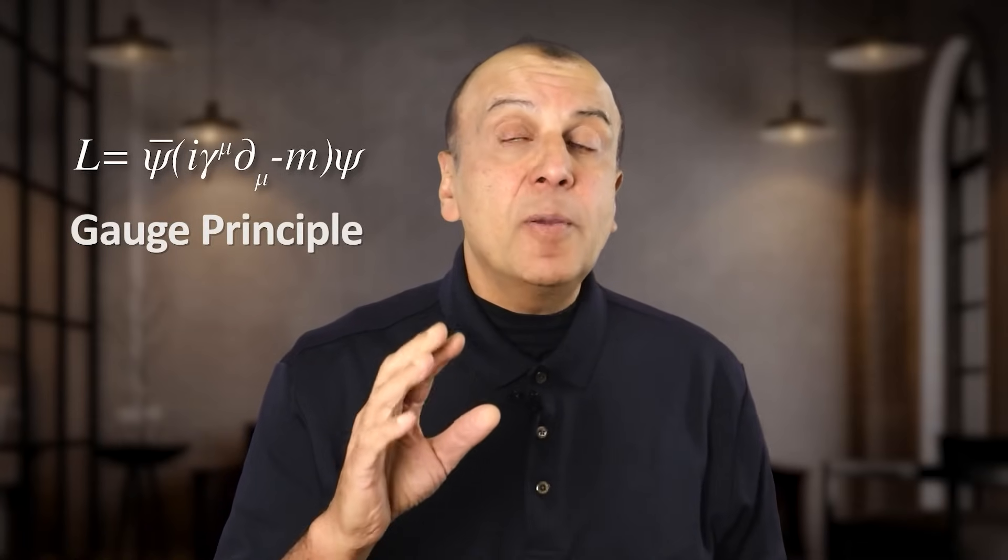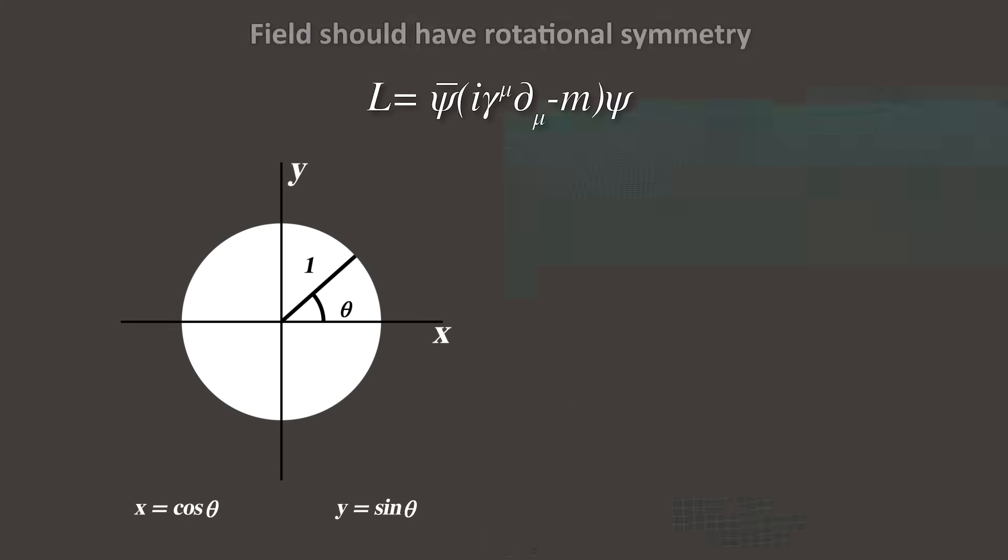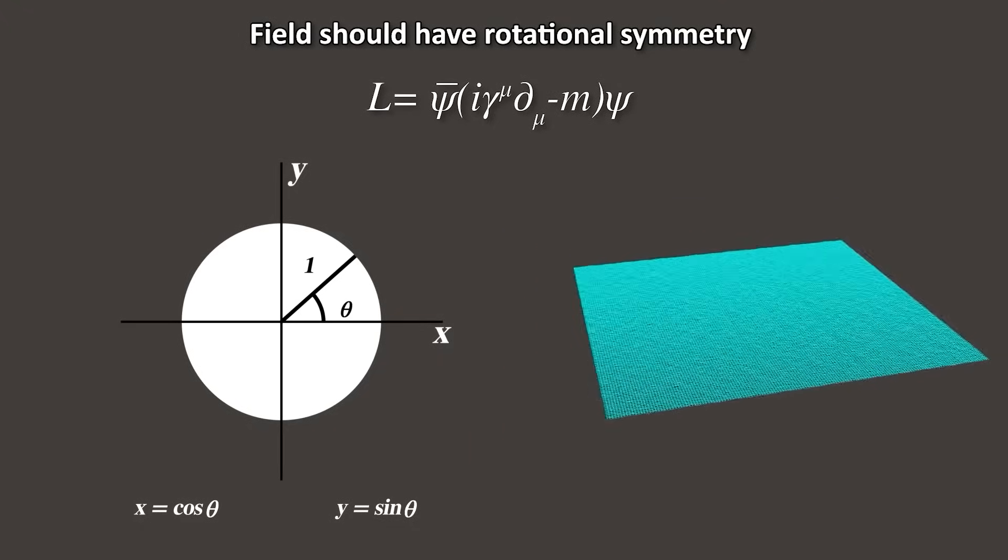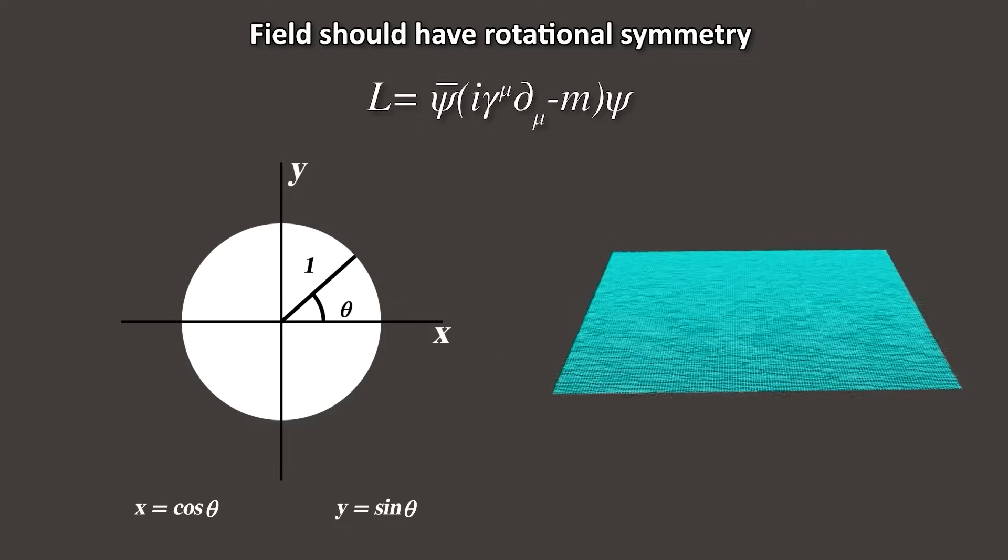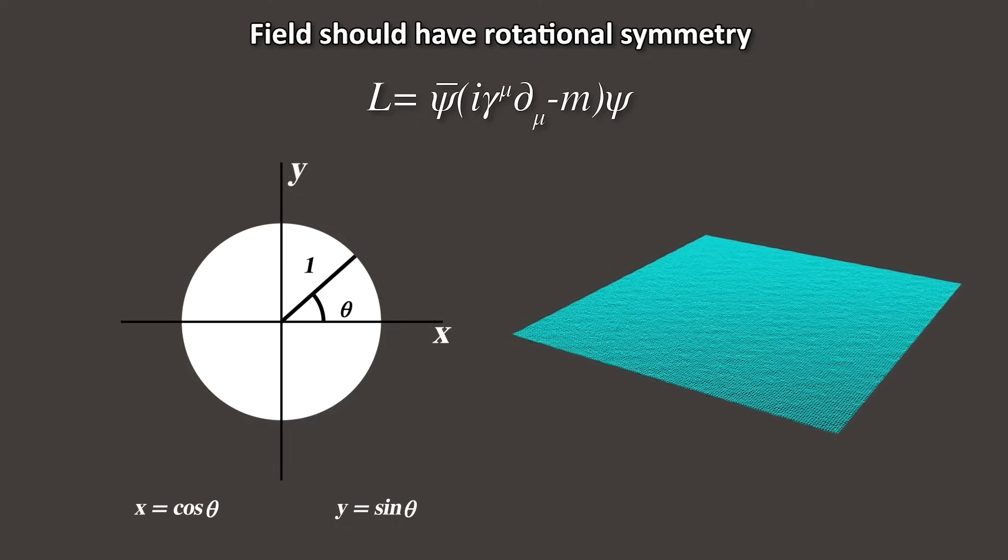To make this equation come to life, we have to introduce the gauge principle. To do that, we have to make a demand to this equation. The demand we are going to make is that this equation must have a symmetry, like that of a circle with a radius of one. Basically, what we are saying is that if we rotate the entire field in any direction, it should act the same. Nothing should change.